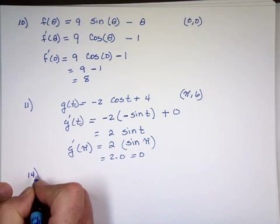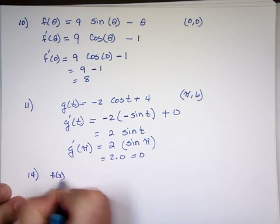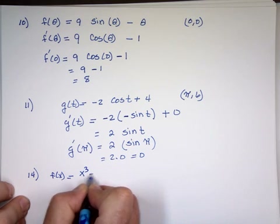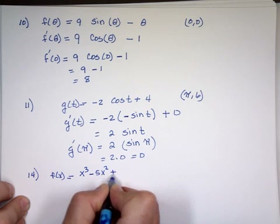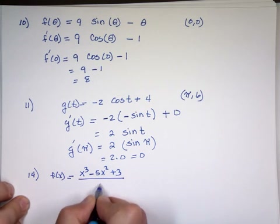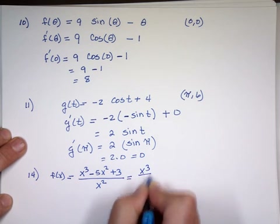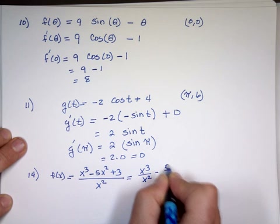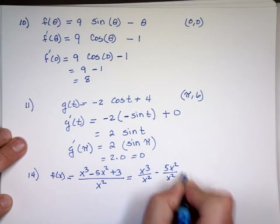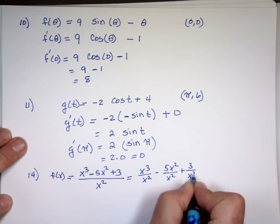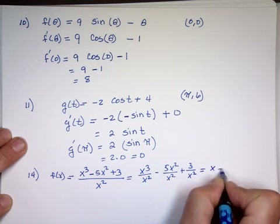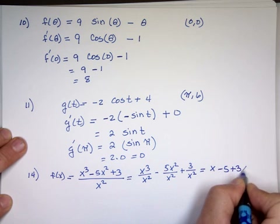Number 14. We haven't discussed the derivative of a fraction yet, but I can still do this without it. You can rewrite it as x cubed over x squared minus 5x squared over x squared plus 3 over x squared. Cleaning that: x minus 5 plus 3x to the negative 2.